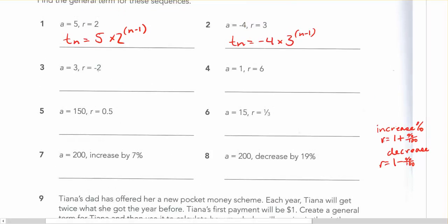This is a situation where you'd want to put the r into brackets. Tn equals 3 times bracket negative 2 to the power of n minus 1.